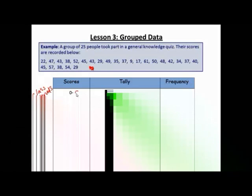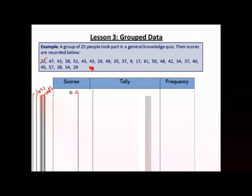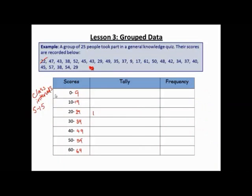Now I'm going to put this data into the tally chart the way I did before. So the first person here is 22, so that would go here in between 20 and 29. 47 would go here, and so on.